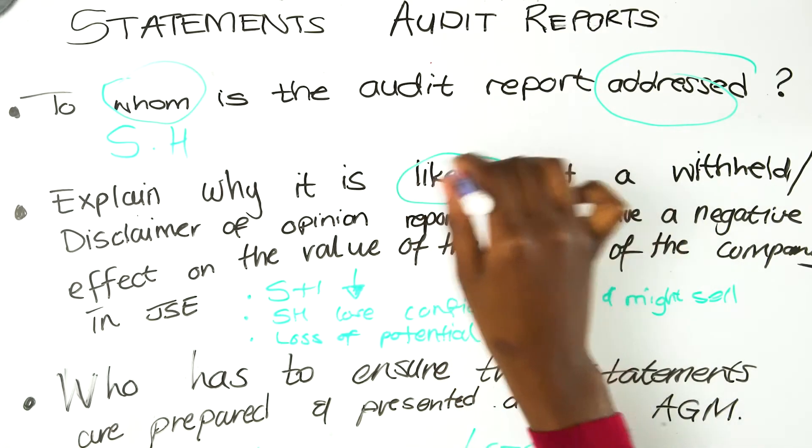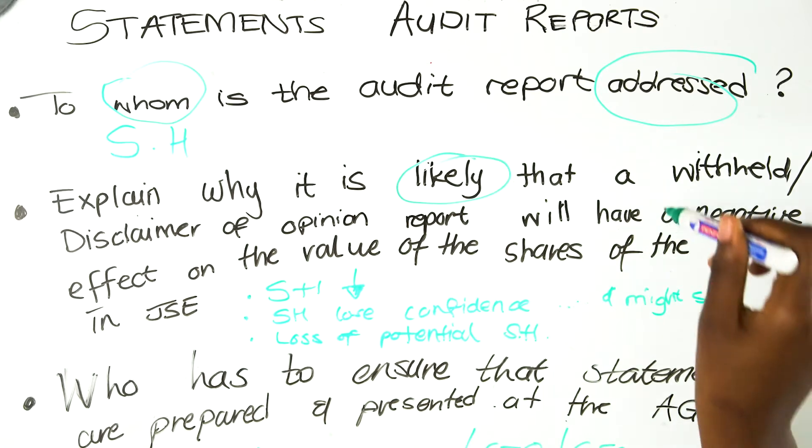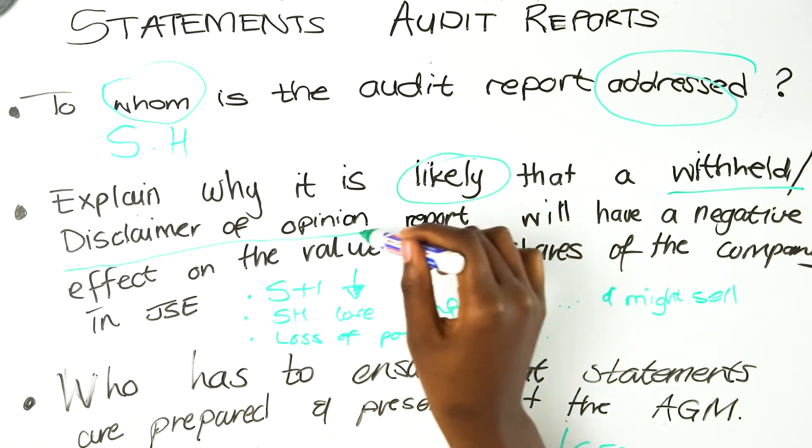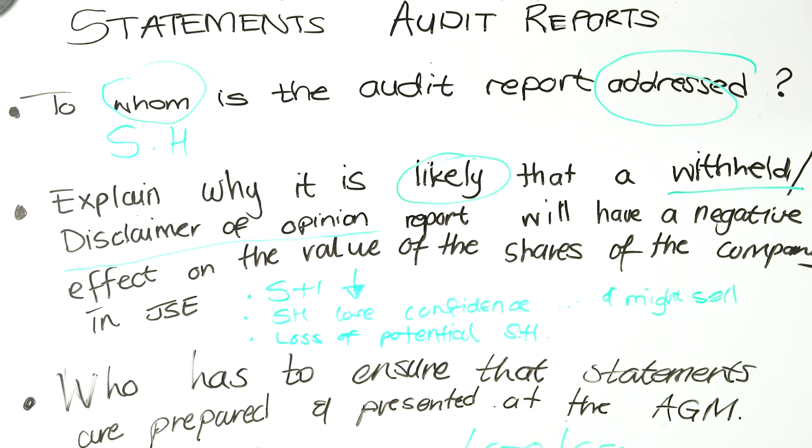Another common question is to explain why it is unlikely that a withheld or disclaimer of opinion report will have a negative effect on the value of shares of the company on the JSE — the Johannesburg Stock Exchange — which is basically the market for shares where stock exchange happens.